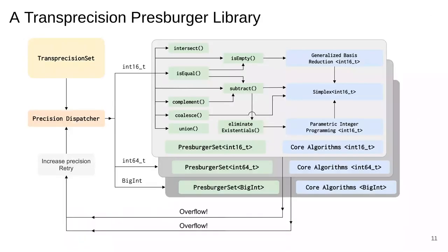Each templated instance of the library throws an overflow exception if one occurs. The dispatcher then catches this exception and retries the operation at a higher precision. This continues until we reach arbitrary precision arithmetic after which no overflows can occur.